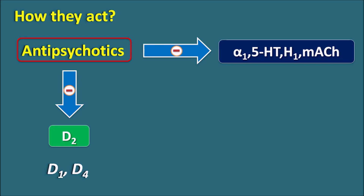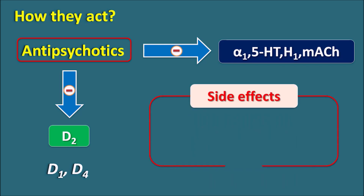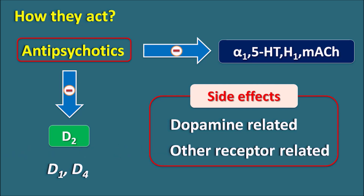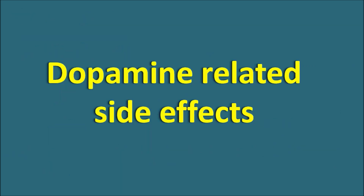We can classify the side effects of antipsychotics into two categories: dopamine-related side effects and other receptor-related side effects. Let us start with the dopamine-related side effects.